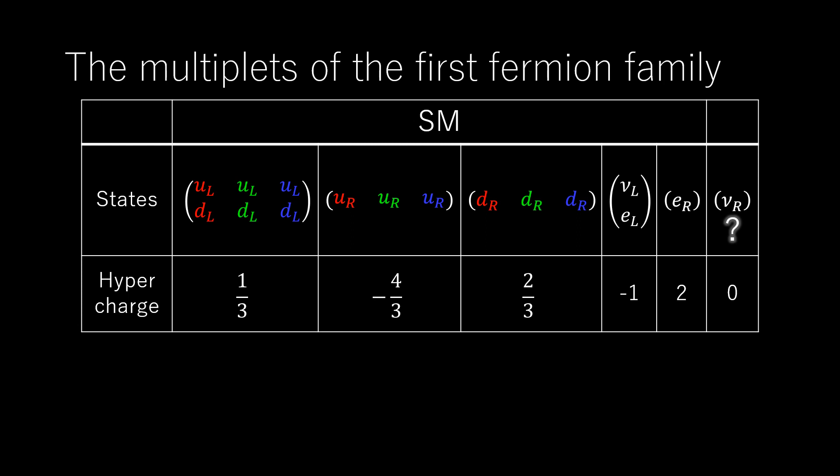The neutrino data clearly necessitate an extension of the standard model and can be explained by a very simple modification. There are no right-handed neutrinos in the standard model, the reason being that no right-handed neutrino has ever been seen. But this does not necessarily mean that there are no right-handed neutrinos, only that we have never seen one.